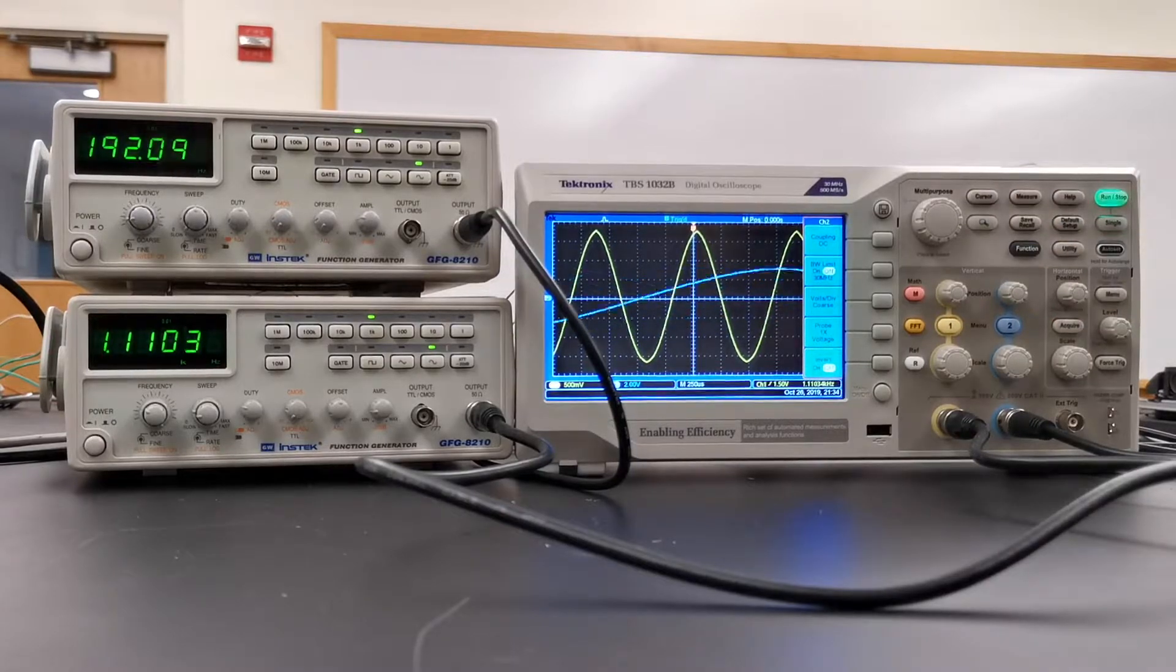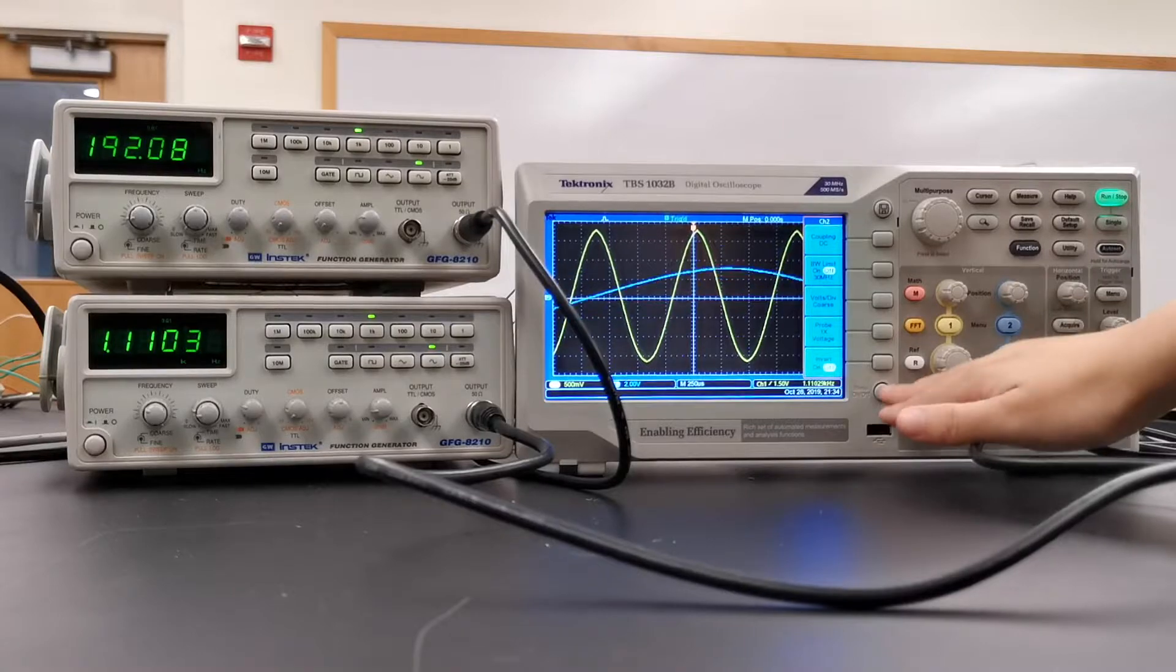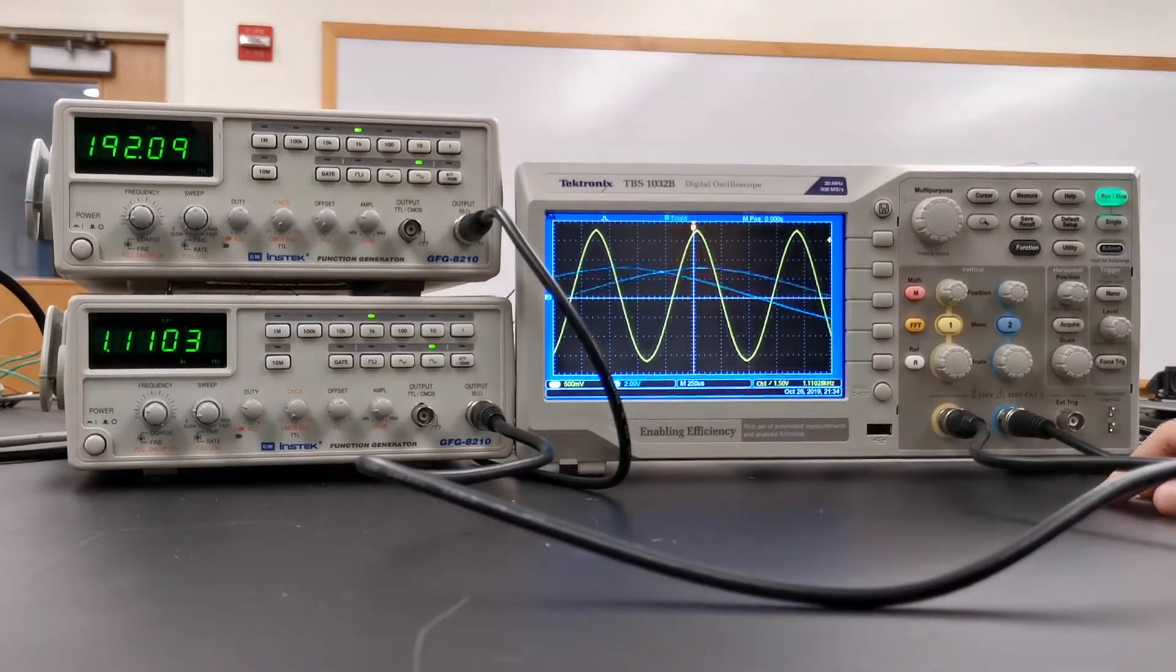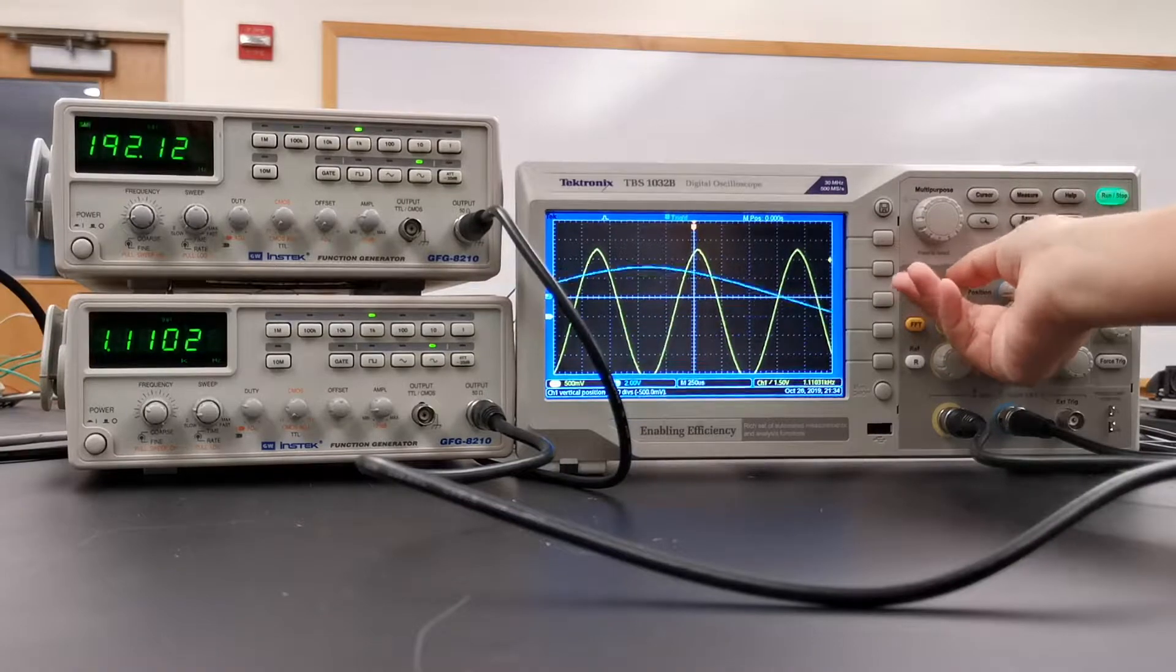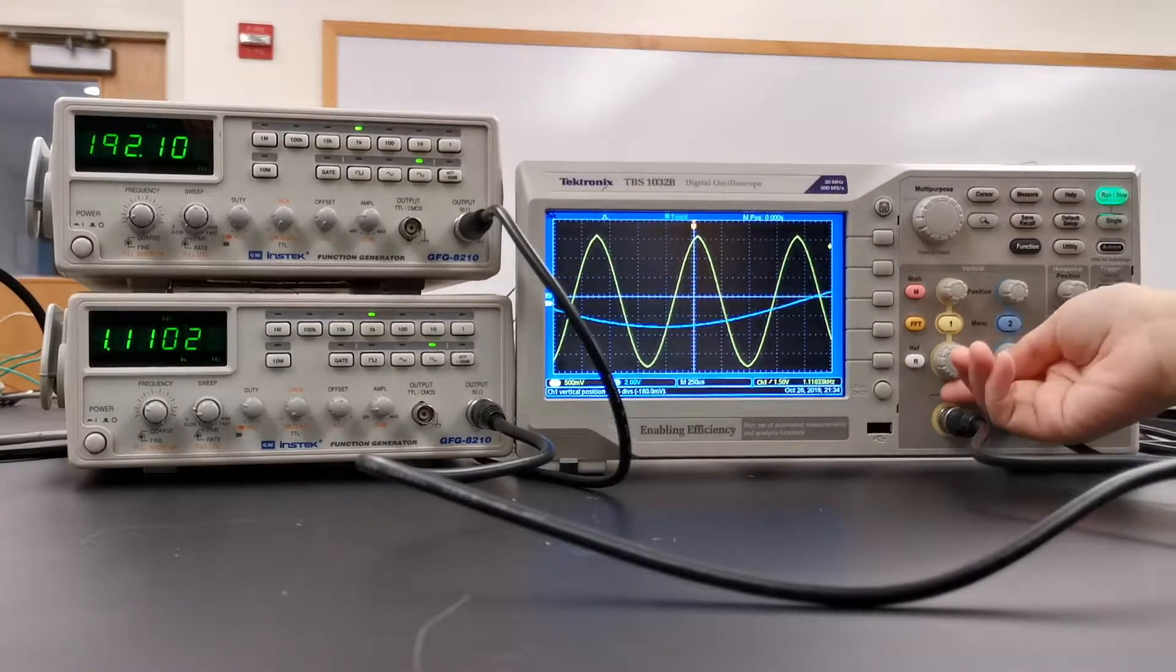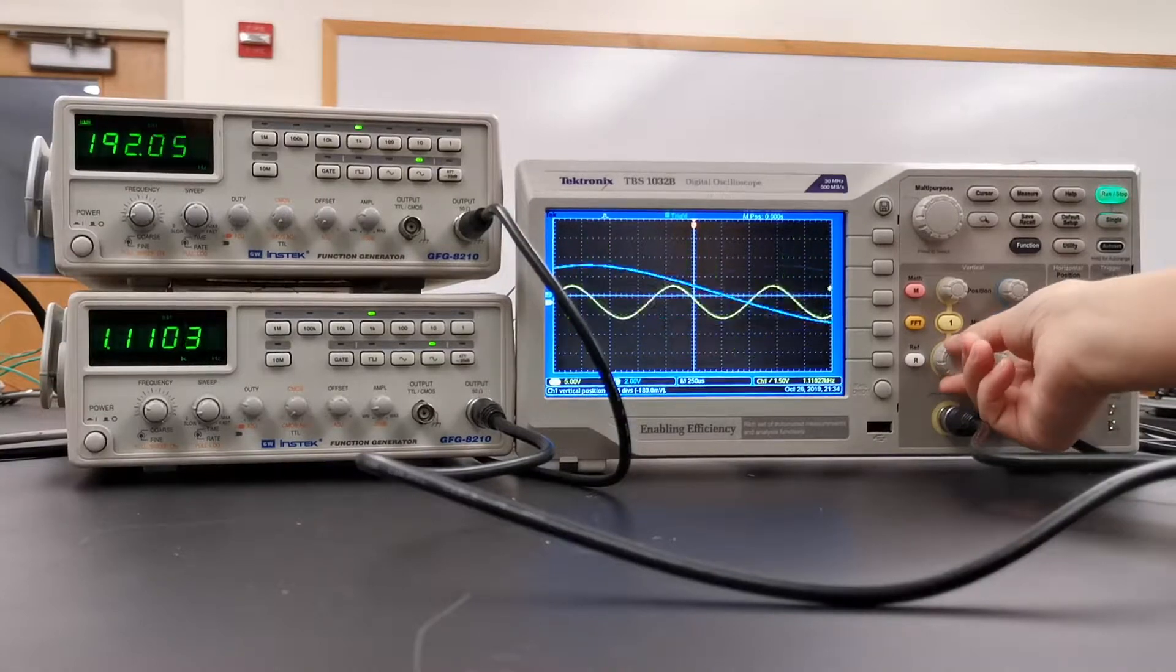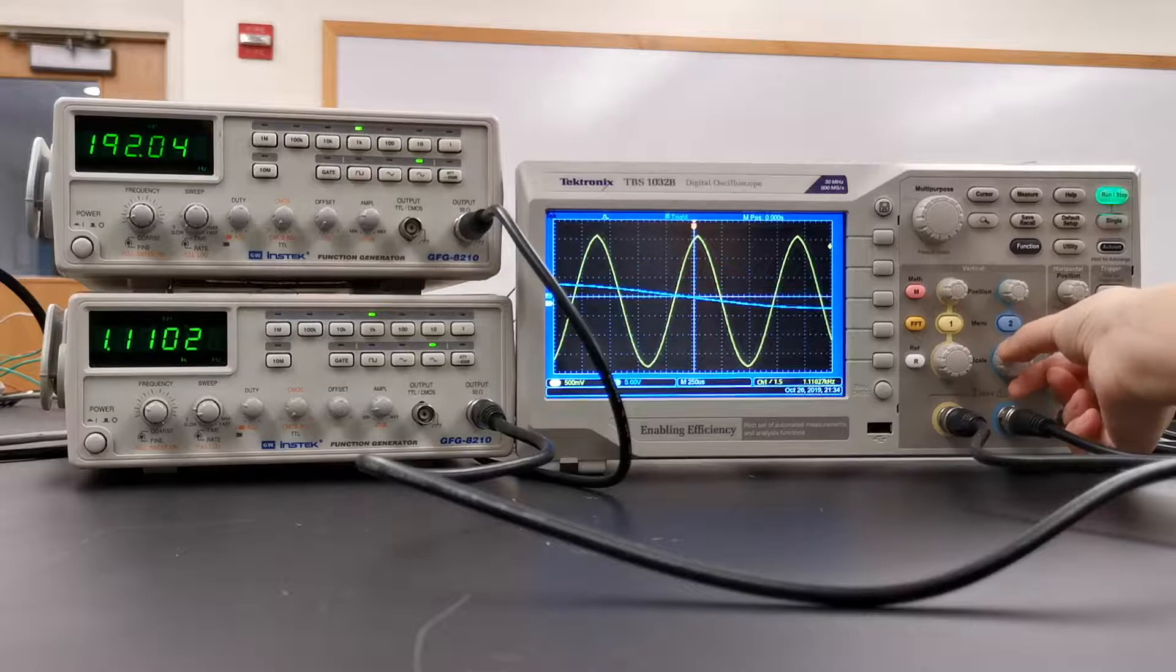So about the functions of this scope: first, you can see there's two waves on the graph. You can change the position of those waves by using this vertical position button, and there is another called scale which can also change the scale of channel one and channel two.